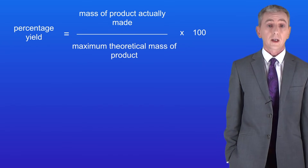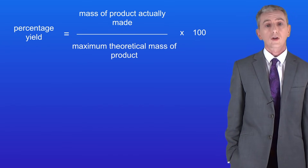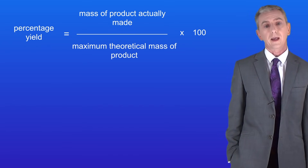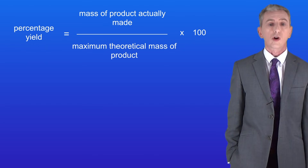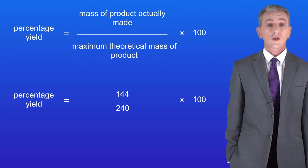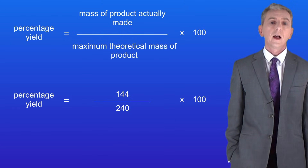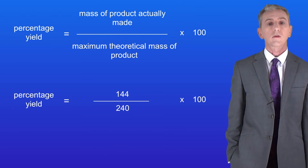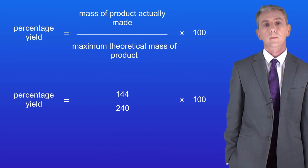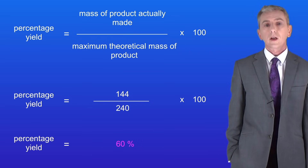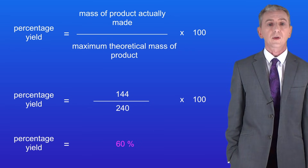The percentage yield is the mass of product actually made divided by the maximum theoretical mass of product multiplied by 100. The question tells us that we've made 144 grams of beryllium chloride and the maximum theoretical mass is 240 grams. Putting these numbers into the equation gives us a percentage yield of 60 percent.